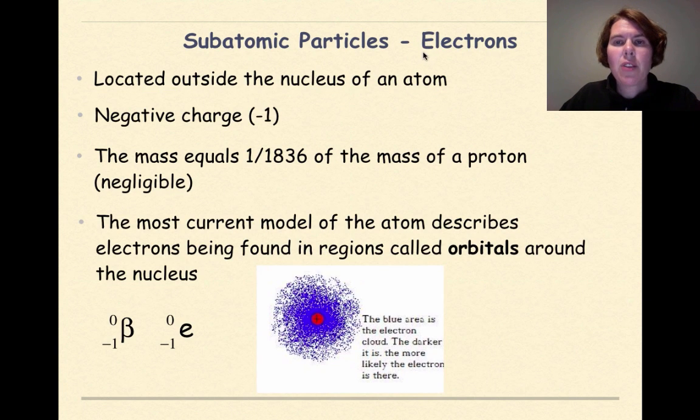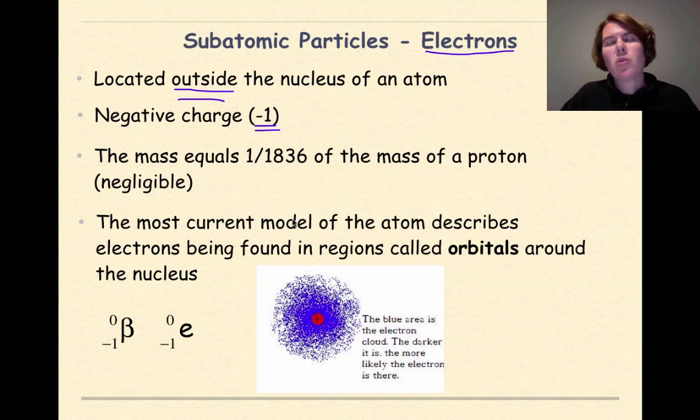So here we have the electron. What do we need to know about electrons? Well, unlike protons and neutrons, which are found inside the nucleus, an electron is located outside of the nucleus of an atom. Electrons are going to have negative charges associated with them. And the mass, if we wanted to get really specific about an electron, is equal to 1,836, roughly, of the mass of a proton. So in other words, really small. In other words, negligible.